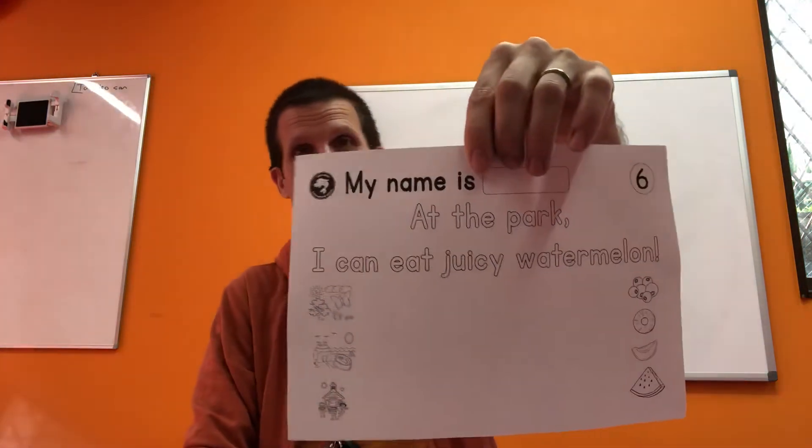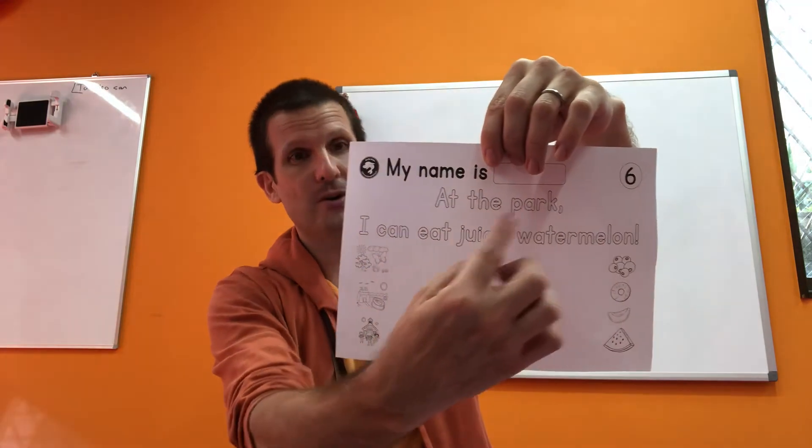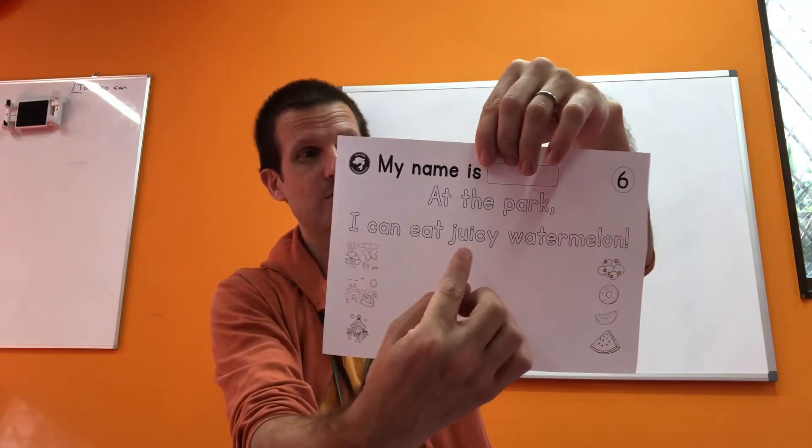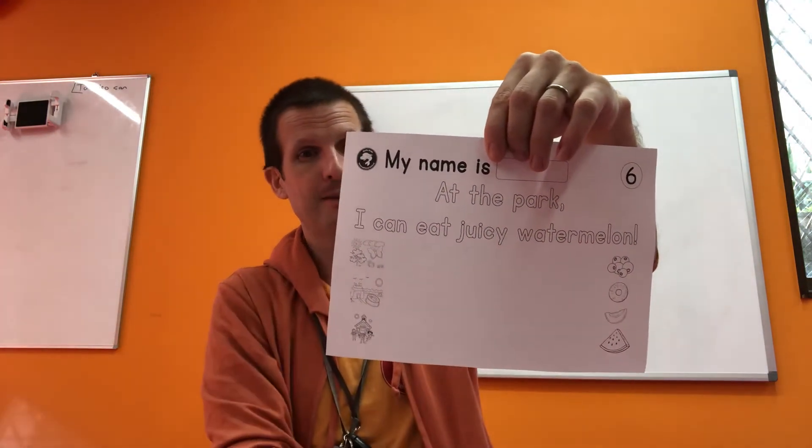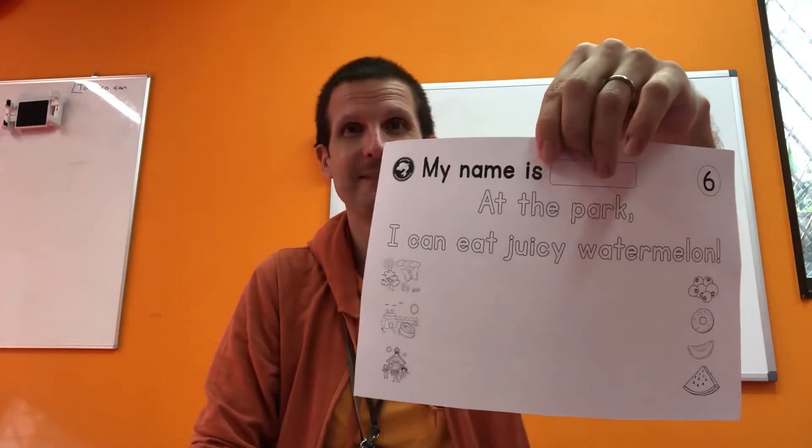Okay. Number six getting harder, of course. Now you have to really be able to understand the sentence you're reading. It says at the park, I can eat juicy watermelon. So draw your line from the park to the watermelon. Okay? Very good, you guys. Very good. Now let's move on.